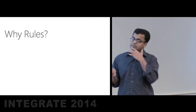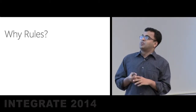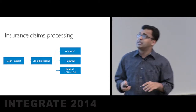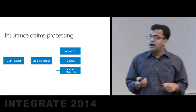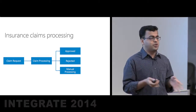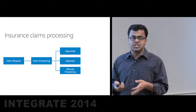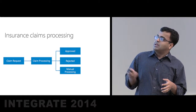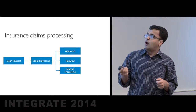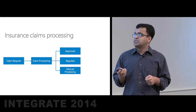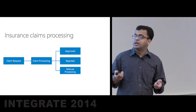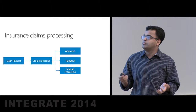Rules overview — let me take a scenario: the insurance claim processing scenario. A claims request that the customer submits goes to your claims processing unit, where your business logic resides and where you do most of the handling. Based on the result, you could choose to approve the claim, reject it, or pass it along for further manual processing, where somebody needs to look at it and approve or reject it based on more details.